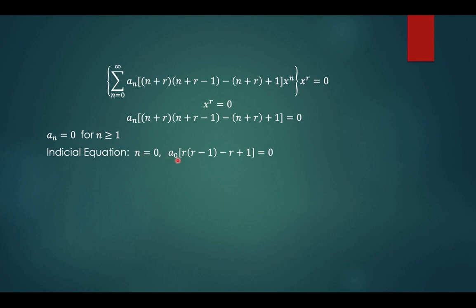At n equals 0, you will have a sub 0 r times r minus 1 minus r plus 1. a sub 0 therefore is not equal to 0 if r minus 1 quantity squared is equal to 0, so that gives you r equals 1. And we have identical roots.